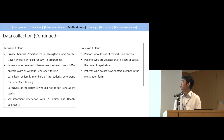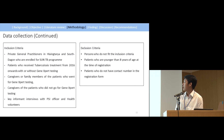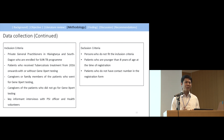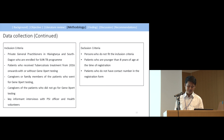Exclusion criteria included those who did not fit the inclusion criteria, patients younger than eight years old, and patients who had no contact number in the registration form — as most clinical providers didn't fill in phone numbers in the registries, making it very hard to find patients. Most patients also provided incorrect addresses, making data collection very difficult.